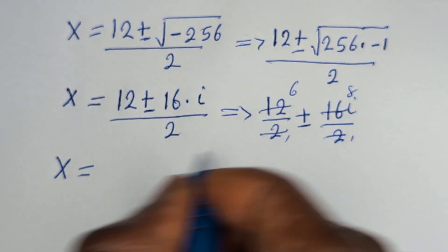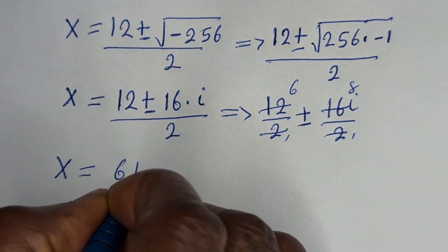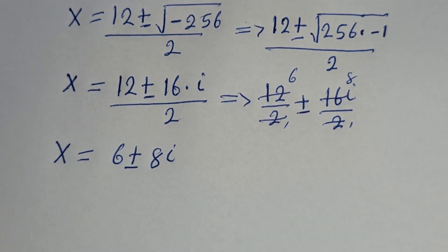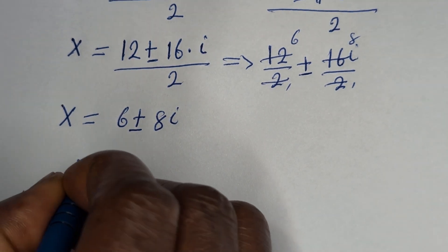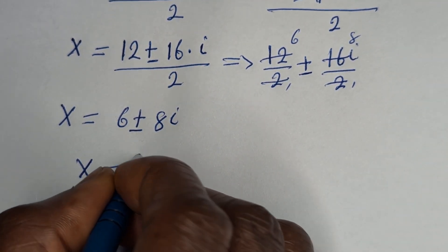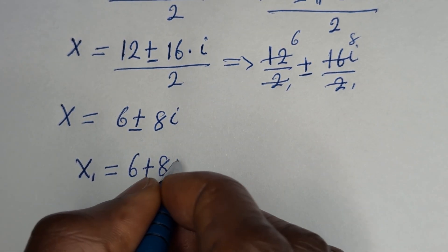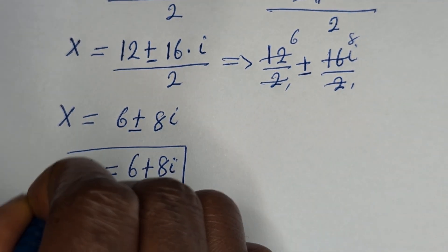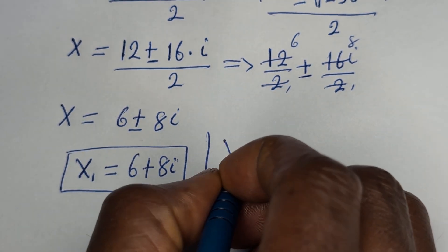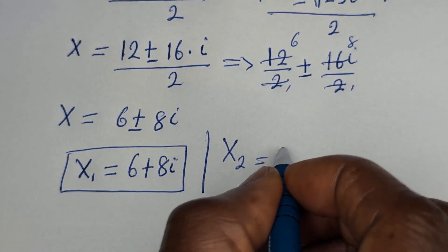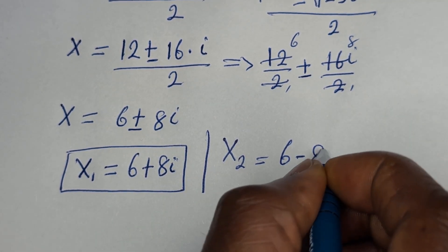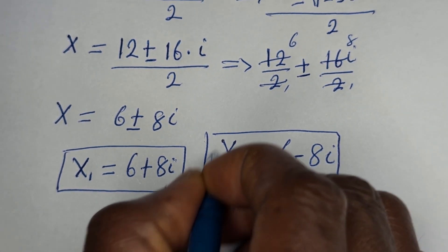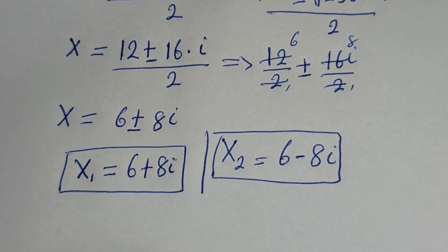So this gives S equals 6 plus or minus 8i. Therefore, S1 is equal to 6 plus 8i, and S2 is equal to 6 minus 8i. These are the two values of S.